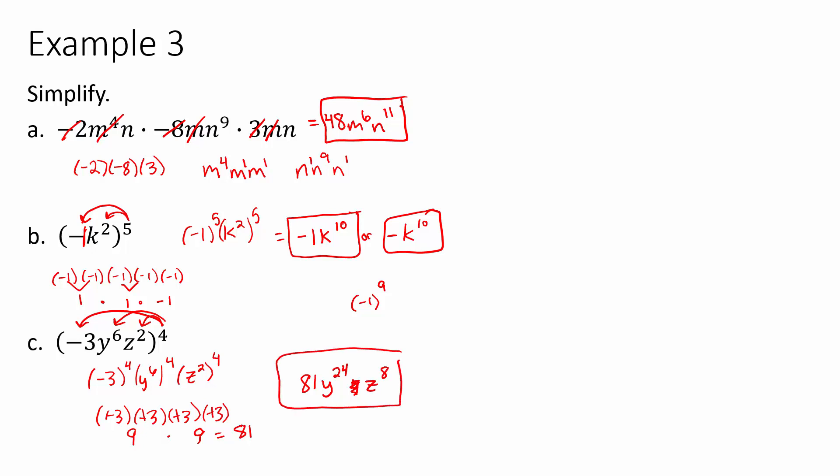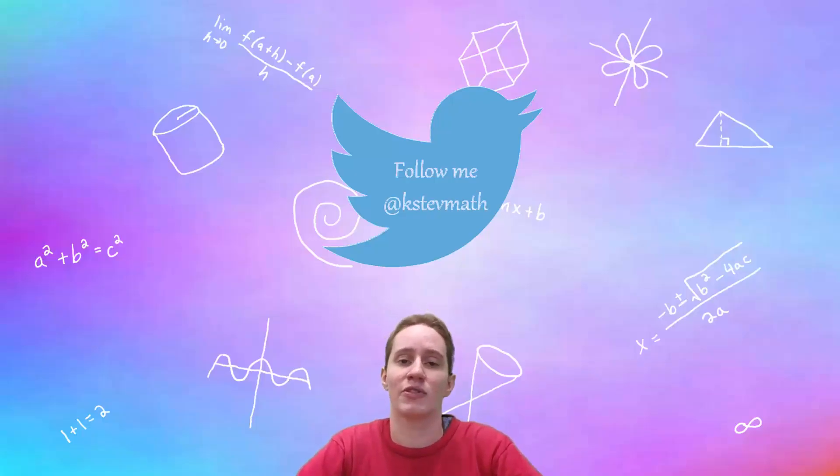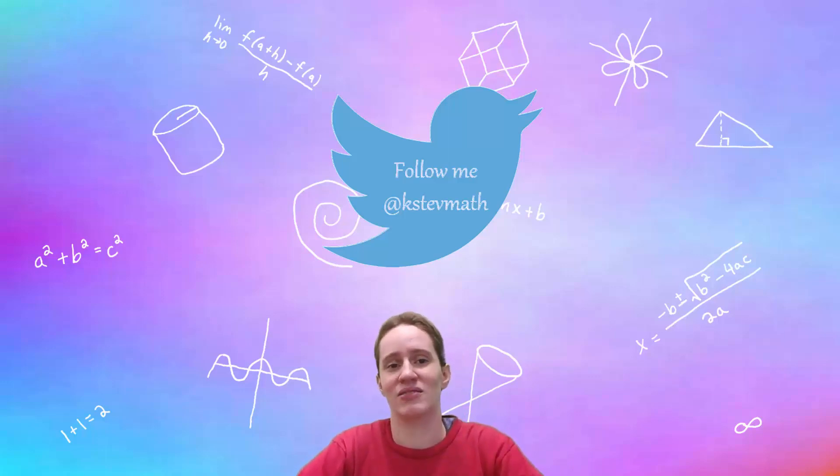So those are the multiplication properties of exponents — the first set of exponent rules in Algebra 1. There will be more rules that make things more complicated. The biggest advice: try something, remembering that normal numbers need normal multiplication, which works differently than applying exponent rules to variables. Practice as much as you can. If you like this video, hit the thumbs up, subscribe for new videos, and follow on Twitter at kstev math.